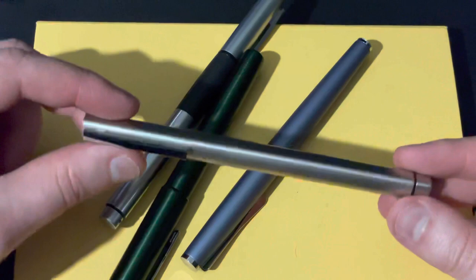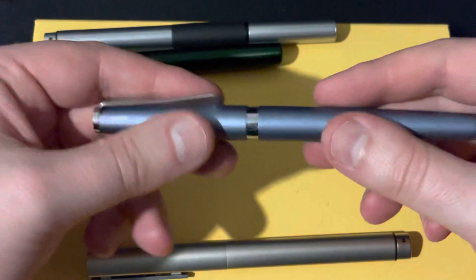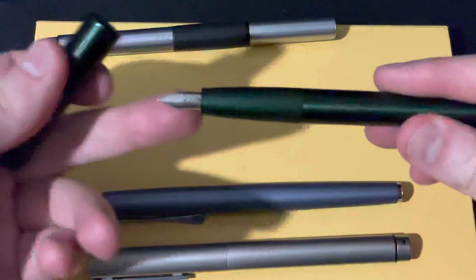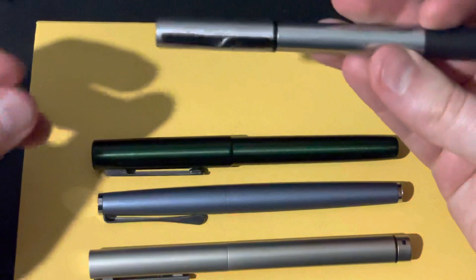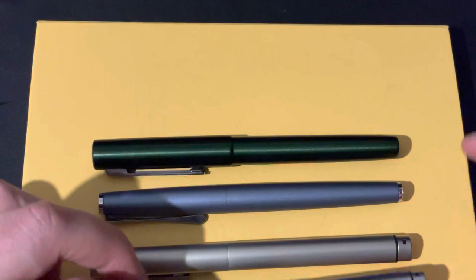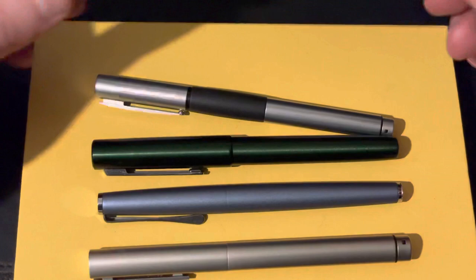Certainly for me as a crazy Lamy collector I just love that the Ideos is a blend of the studio with its shiny section and satisfying click cap, the Aeon with its unique nib shape, the accent with its posting mechanism although the look is the same the feel is quite different but it looks like it's part of the same family, and then the classic safari or all-star with its triangular grip section that guides your fingers to where they need to be to hold that nib straight on the page.